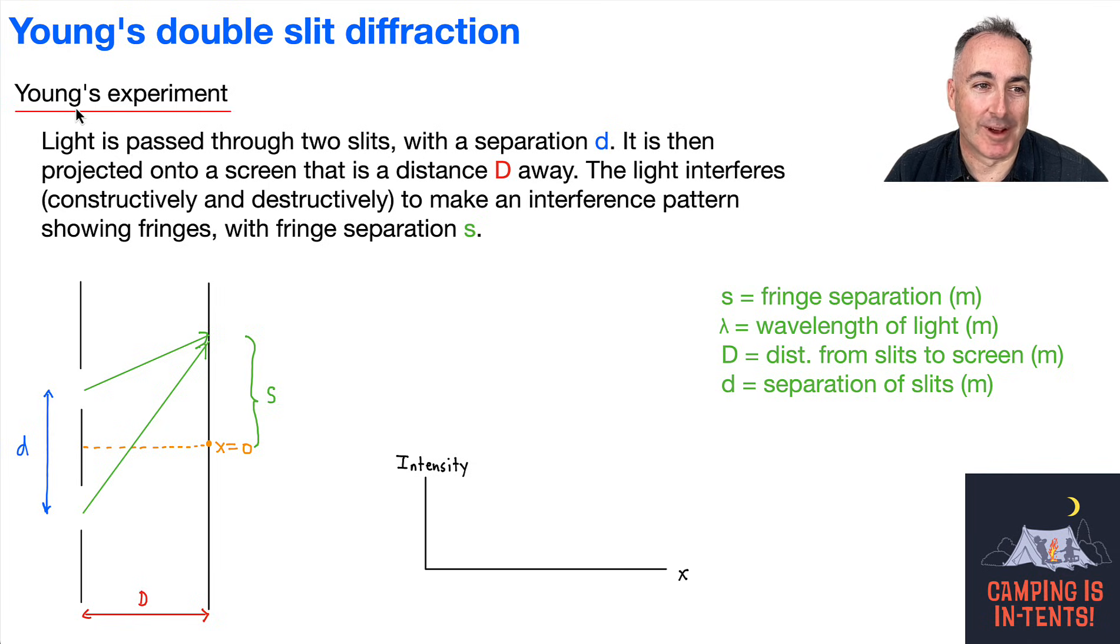So Young's double slit experiment, what is that? Well, that's when you take a light and you pass it through two slits. That's why it's called double slit. So here's a slit, and here's another slit. In other words, an opening. Now there's going to be a slit separation d here, lowercase d. Now that light is going to be projected onto a screen at the distance D away. And that light now, it's going to interfere both constructively and destructively. So that's where they add up or cancel out. And it's going to make this interference pattern showing these fringes, and these fringes are going to have fringe separation s.